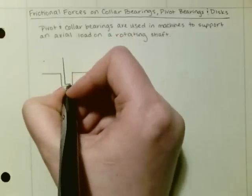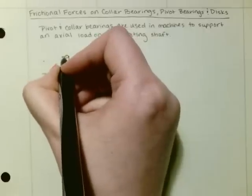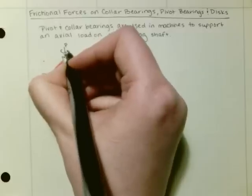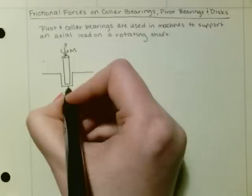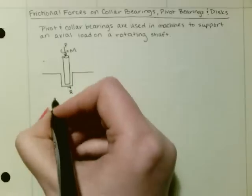So this is a pivot bearing. We would have an axial load P and a moment M and a radius of R. This is our pivot bearing.